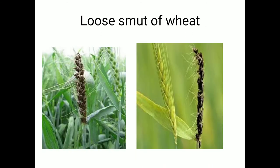The next disease is loose smut of wheat. Smut means the ear head is completely or partially transformed into a black sorus. If you touch the grains, a blackish powder is observed from the infected ear head, and only the rachis remains — all other parts of the plant, mostly the ear head, are infected. Loose smut of wheat is caused by the fungus Ustilago tritici.